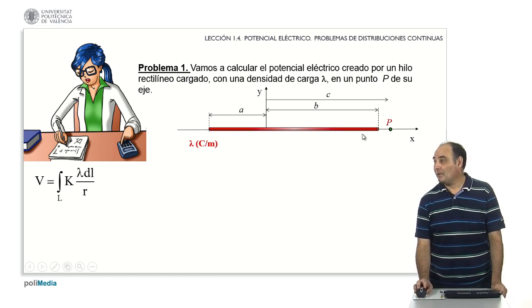The bar starts at the point of coordinates minus a, 0, and ends at coordinate point b, 0. And what I want to do is calculate the potential at an external point of the same alignment, which would be c, 0.